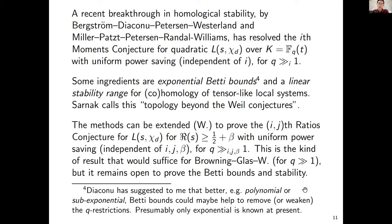Let me briefly comment on the proof. It uses the Lefschetz trace formula to re-express statistics of L-functions as alternating sums of traces of Frobenius on certain cohomology groups. To control these, you need two things: understand the cohomology groups near the top (via the stability range), and bound the rest using Deligne's resolution of the Weil conjectures plus exponential Betti number bounds. For harmonic families, Will Sawin has also proven most of the ratios conjecture with this kind of Q restriction.